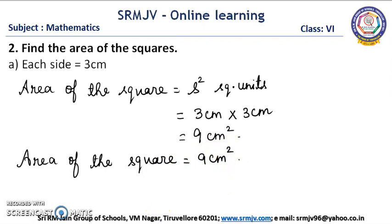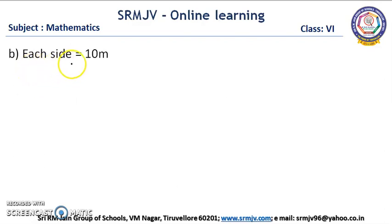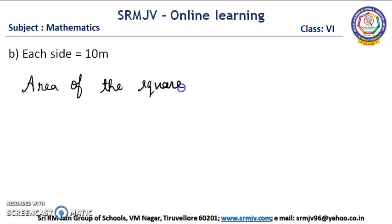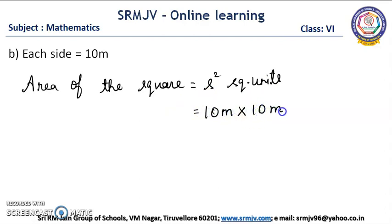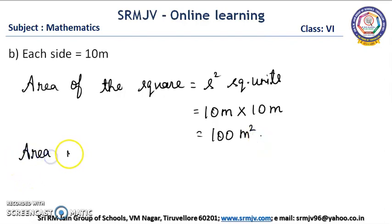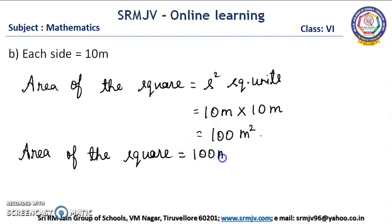Shall we go to the next one? Each side of the square is 10 m. First we write the formula: area of the square is equal to side squared square units, that is side into side. Side is 10 m into 10 m. 10 tens are 100, m into m is m square. So the area of the square is equal to 100 m square.